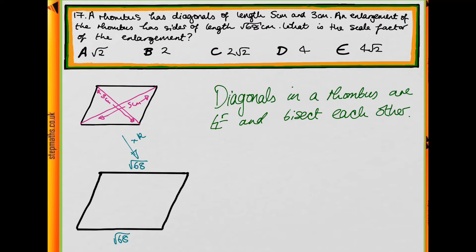So the important piece of information we need to use is this. This is really key for this question, without it it's a bit difficult. The diagonals in a rhombus are perpendicular and they bisect each other.